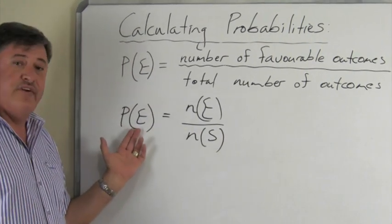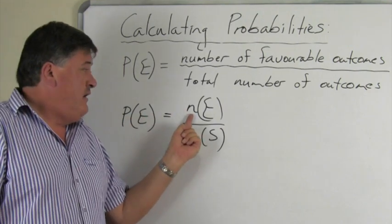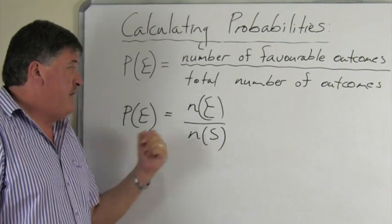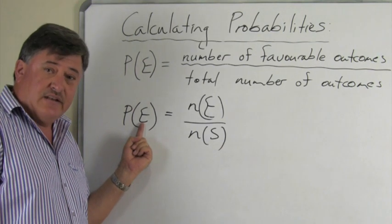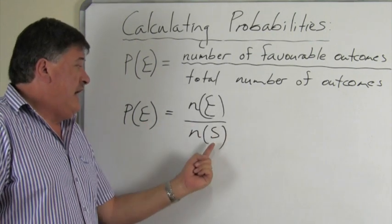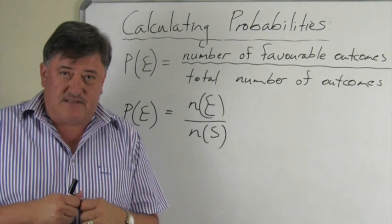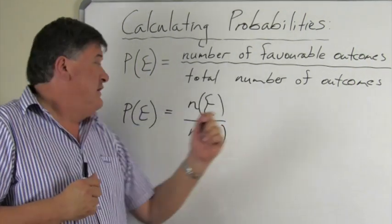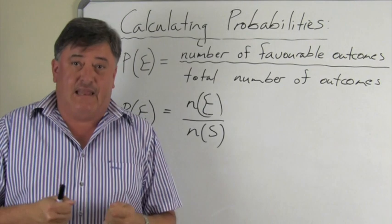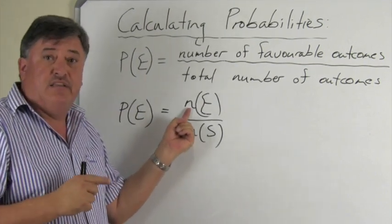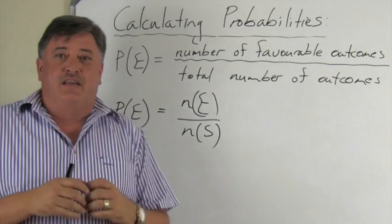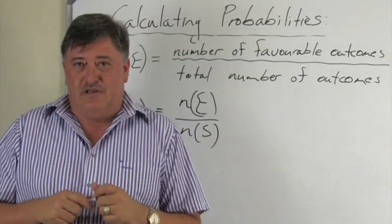Our definition to calculate probability can be written in symbols as: the probability of an event equals n(E) divided by n(S). E stands for the event — getting a six on a die or heads on a coin. S is called the sample space, meaning all possible total outcomes. The symbol n stands for 'how many', so n(E) is how many outcomes are in the event and n(S) is how many outcomes are in the sample space.